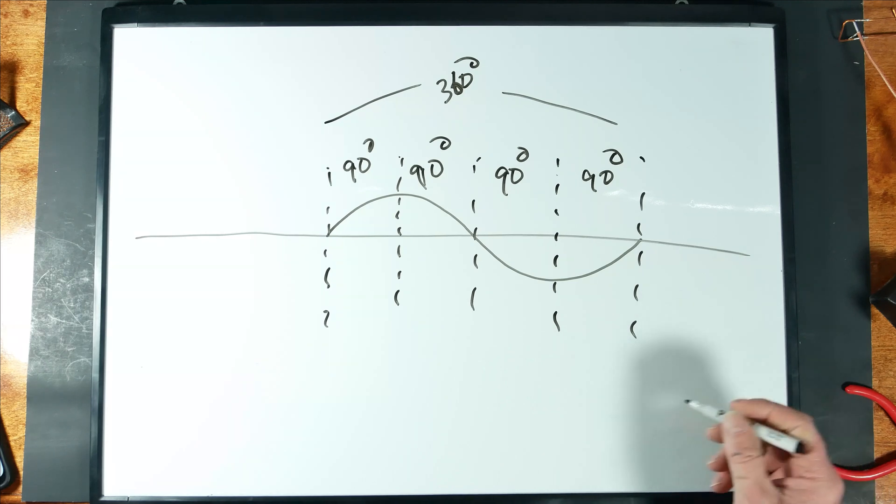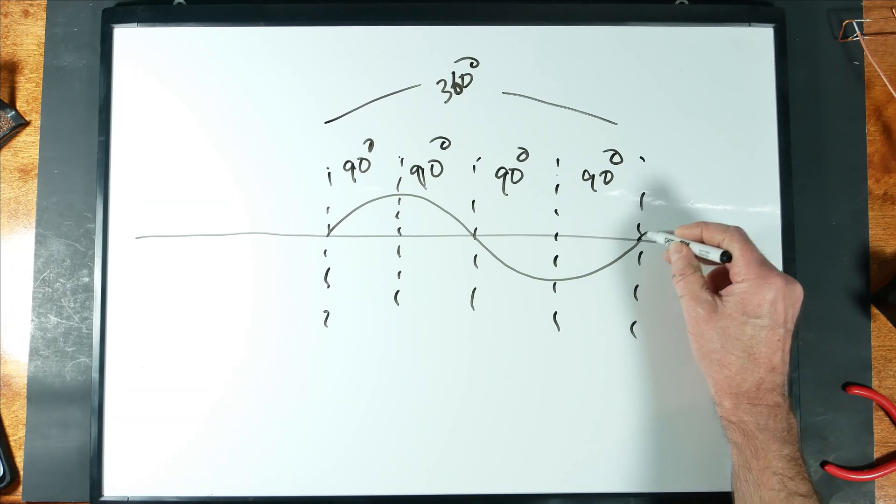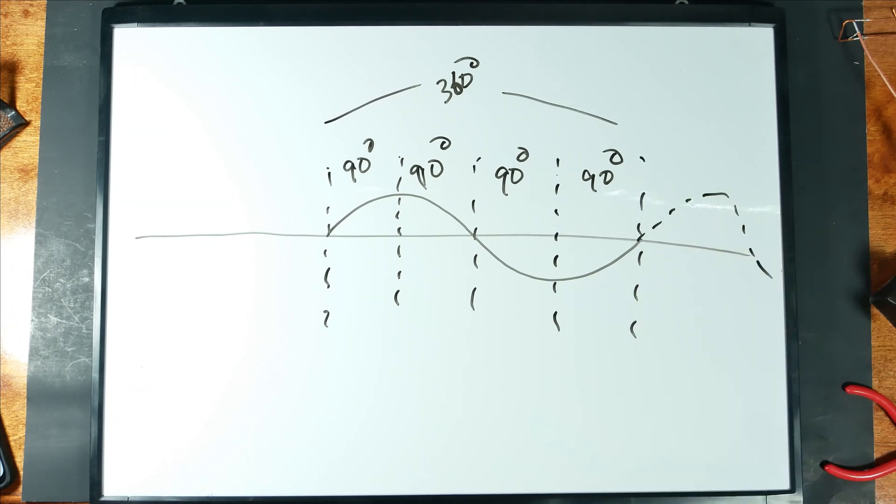And why is that important? Well, whenever you go 360 degrees in just about anything, you end up back where you started. So indeed, if we were to continue this waveform on, it would just repeat itself. So that's important for antenna building for a lot of reasons.